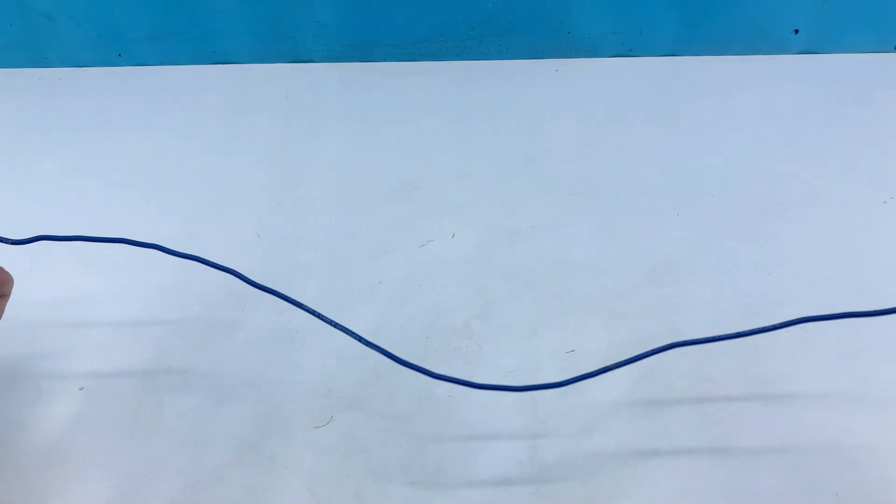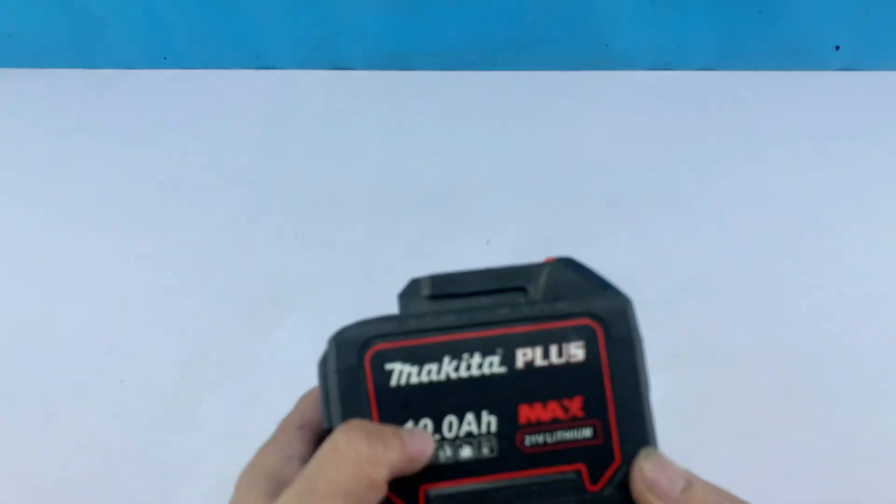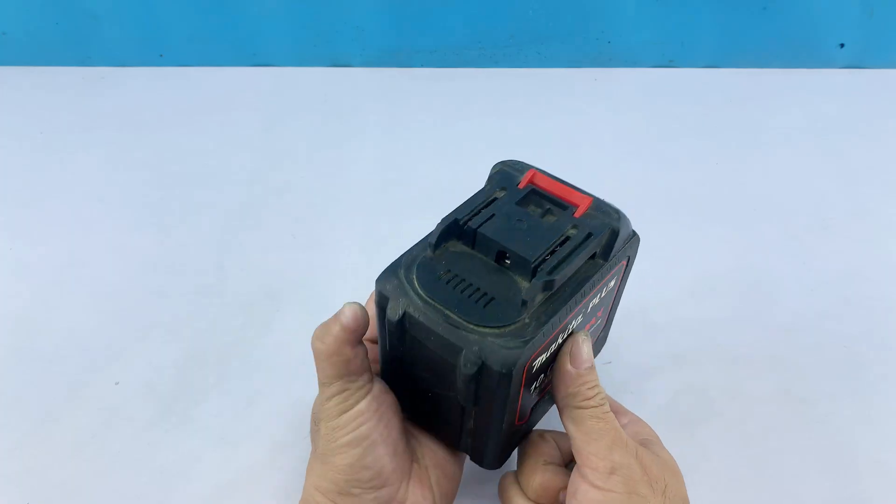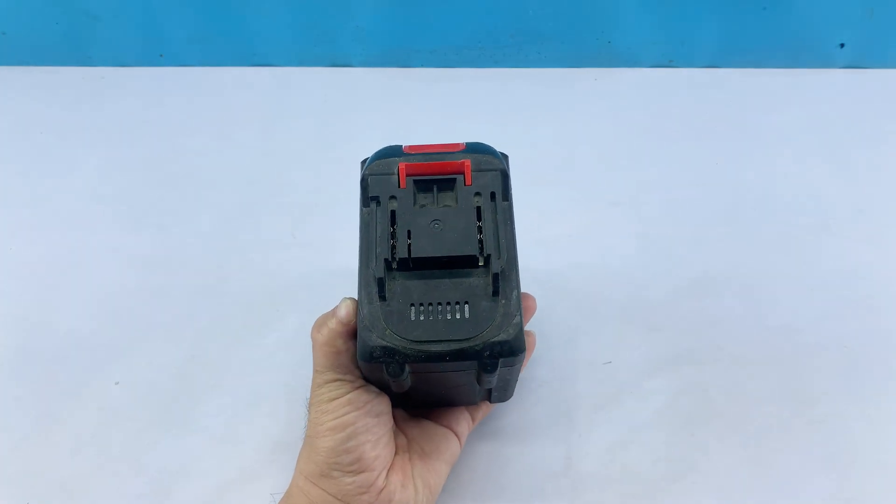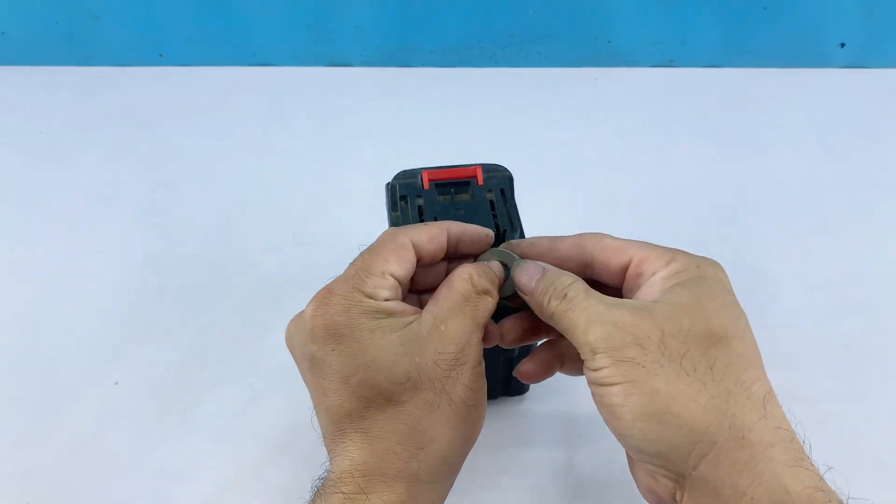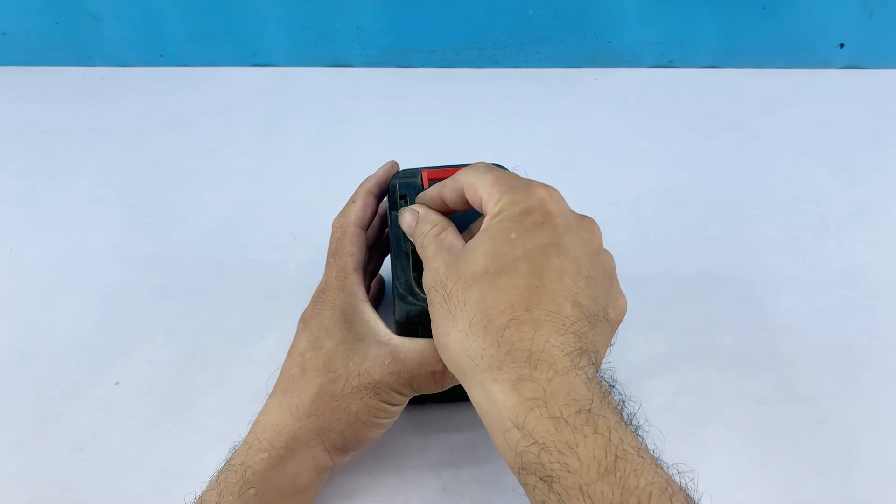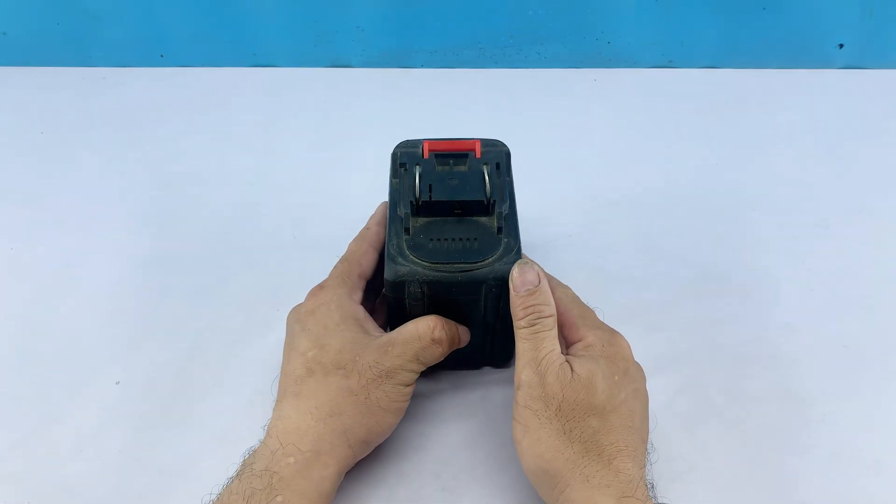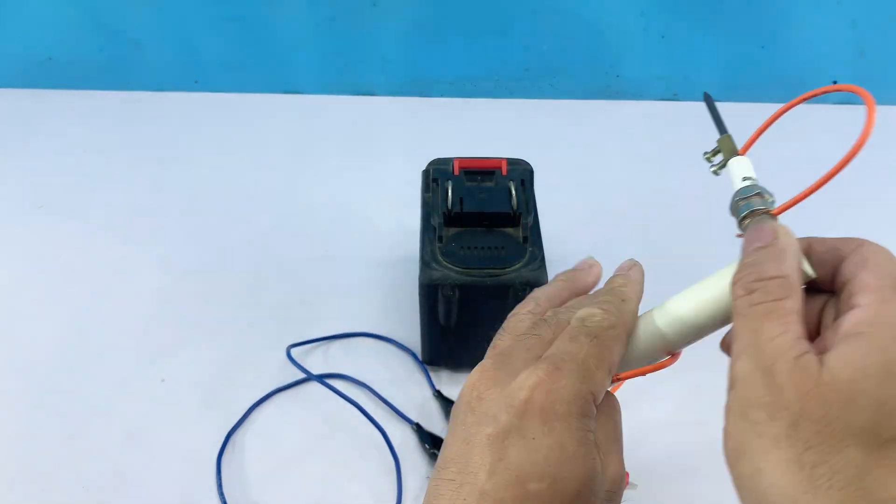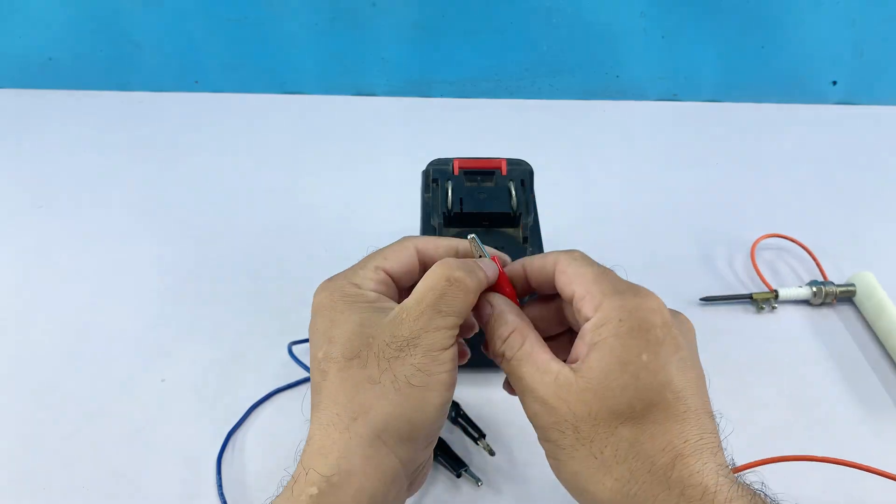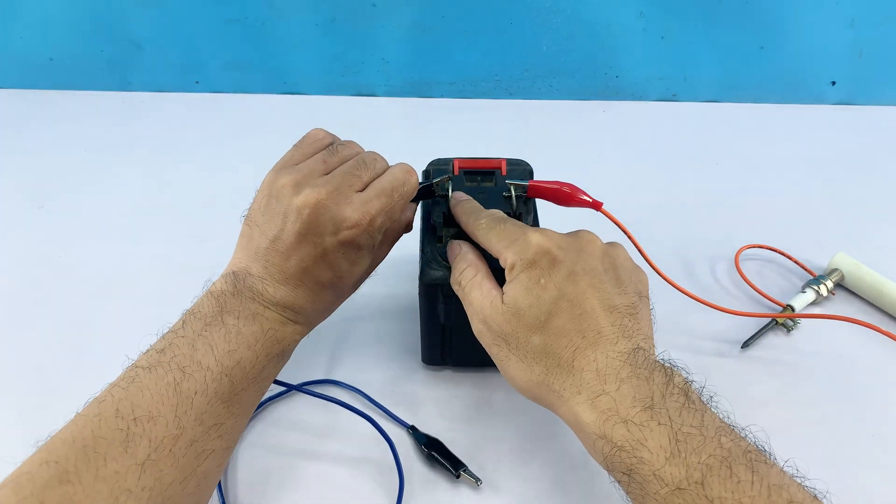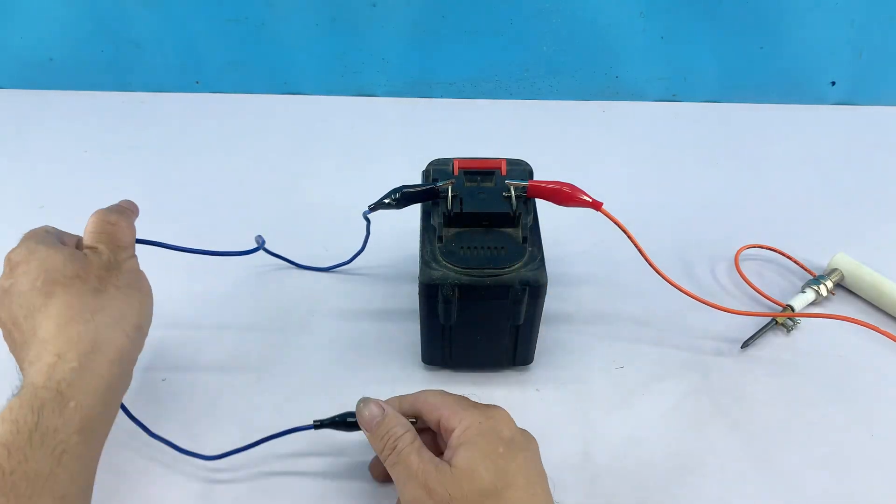I'm preparing our power source, which is a Makita battery pack. I am attaching two washers to the connectors to ensure a secure connection. Now, I connect the red alligator clip from our spark plug assembly to the positive terminal of the battery, and the blue alligator clip to the negative terminal.